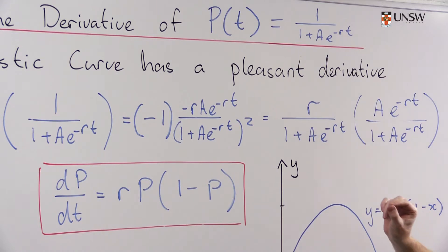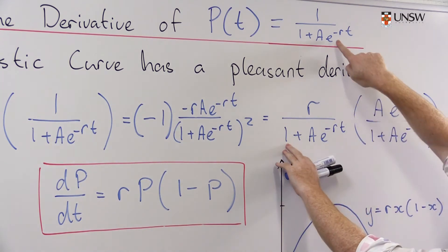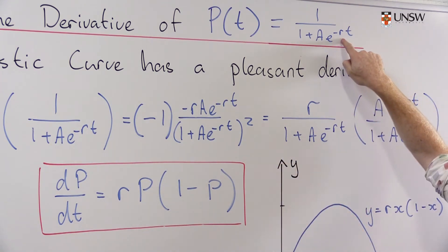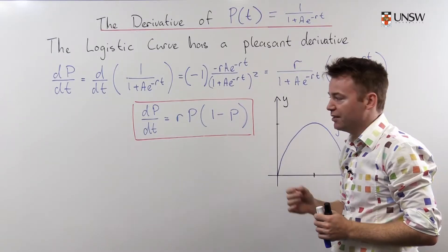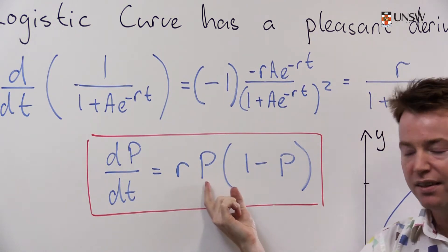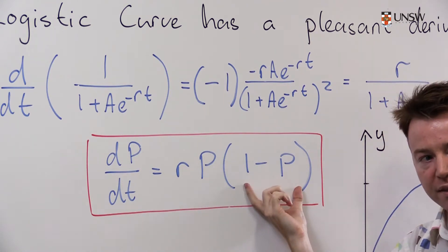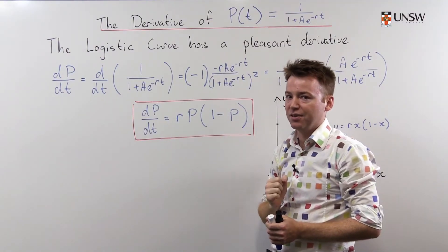And the reason I've written it like this is because this term here is just r times P. Recall that P is defined just as 1 over 1 plus ae to the negative rt. So this term here is just P. This term here, well if I plus 1 over here and minus 1 over here, then I can rewrite this as 1 minus P. So the derivative has this nice form where it's proportional both to P and 1 minus P.